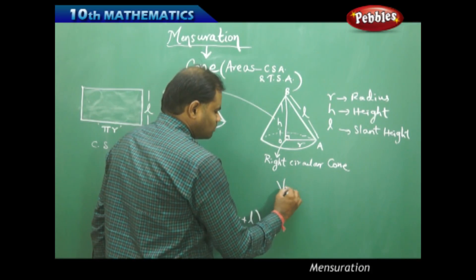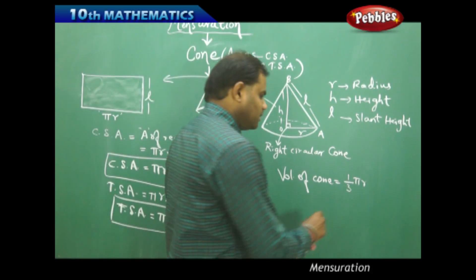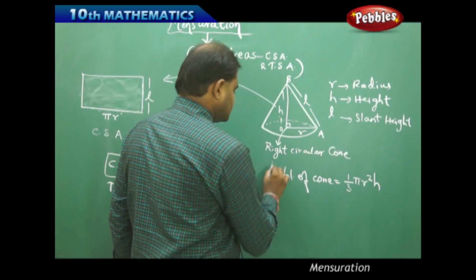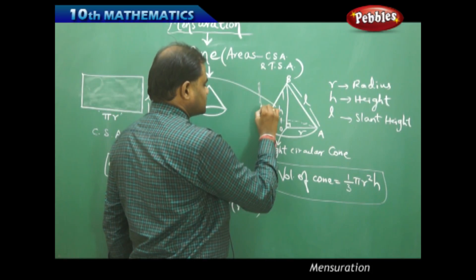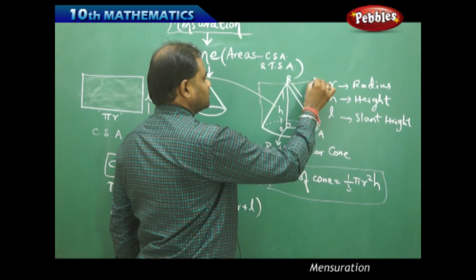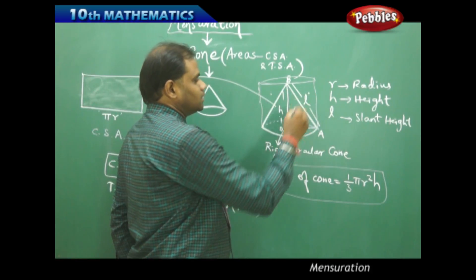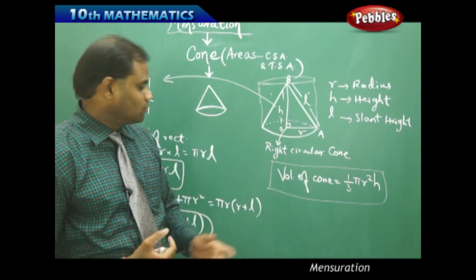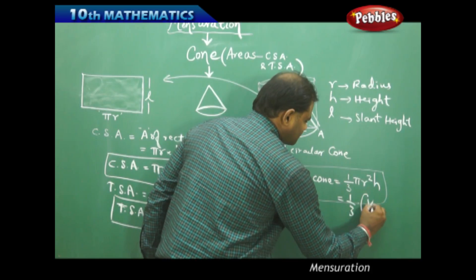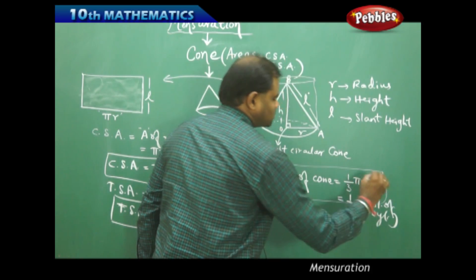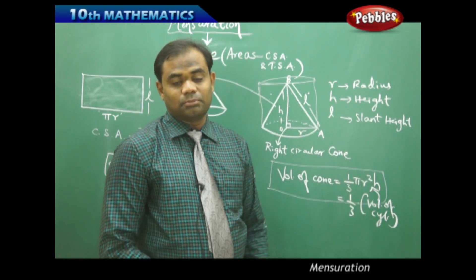Similarly, the volume. The volume of a cone is given as (1/3)πr²h. This formula is obtained from the cylinder. If I construct a cylinder, a cone is one-third of that cylinder, because three cones can be combined to form one cylinder. Therefore, the volume of a cone is one-third of the volume of a cylinder, which is πr²h. Hence, volume of a cone is (1/3)πr²h. This is how we understand the properties of the cone.